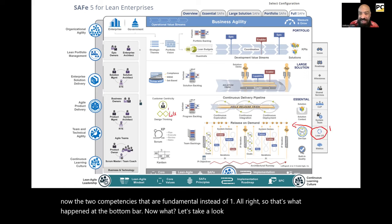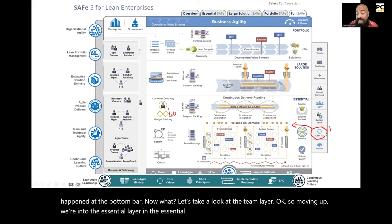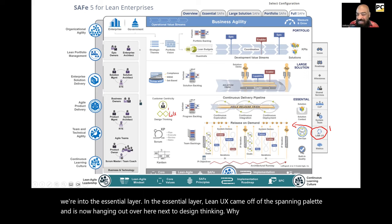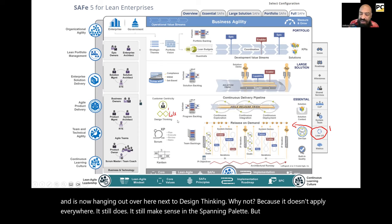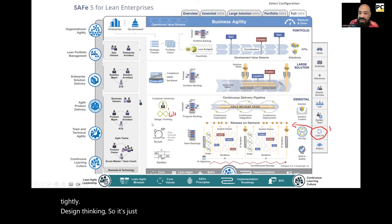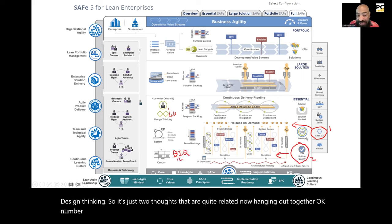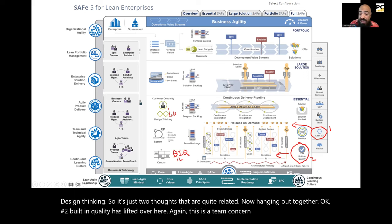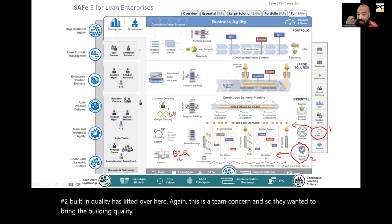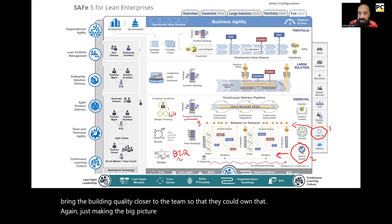Now let's look at the team layer — moving up into the essential layer. Lean UX came off of the spanning palette and is now hanging out over here next to design thinking. Not because it doesn't apply everywhere — it still does — but it ties very tightly with design thinking, so it's just two related thoughts now hanging out together. Number two: built-in quality has shifted over here. This is a team concern, and they wanted to bring built-in quality closer to the team so they could own it.